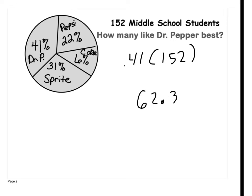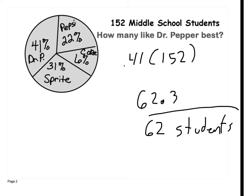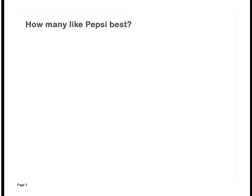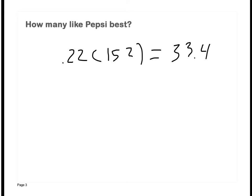When I do that, I get 62.3. But can I have 0.3 of a student? No. So what we do is we round — 62 students like Dr. Pepper the most. Now, how many like Pepsi best? What percentage liked Pepsi? 22. So I take 0.22 and times it by my total number of students. My percent times my whole gives me my part: 0.22 times 152 gives me 33.4, which I round off to 33 students.